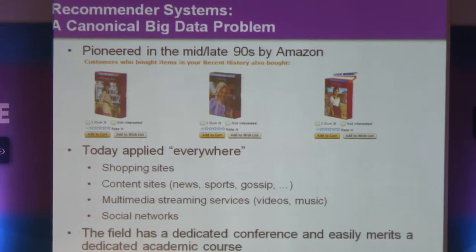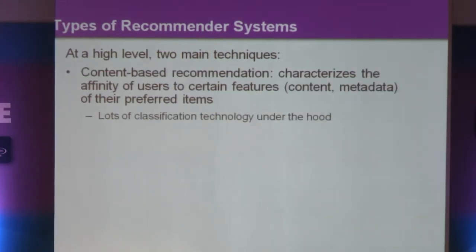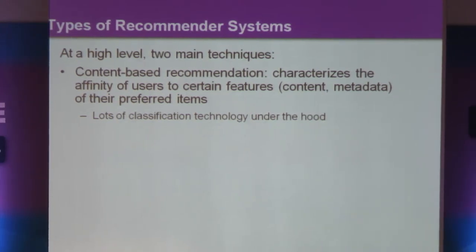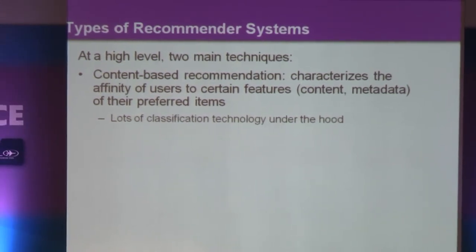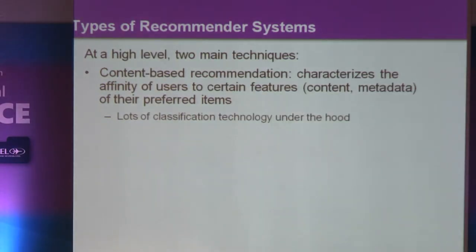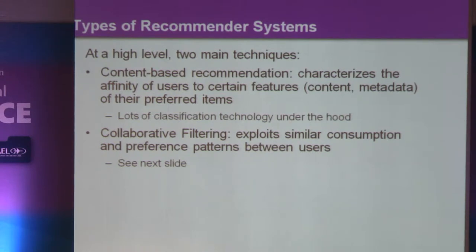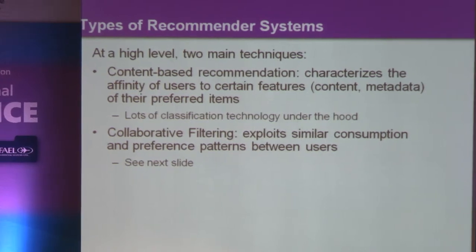This is a huge field. It has a dedicated conference, dedicated tracks in other conferences, and it easily merits an academic course. At a high level, there are two basic techniques of recommendation. The first is content-based, where the systems compute the affinity of users to certain features of the items being recommended — either hardcore content features or metadata. For example, in the movie case: who are the actors, who is the director, what is the genre. There is a lot of classification technology going on behind the scenes. Most state-of-the-art systems combine these two flavors somehow.